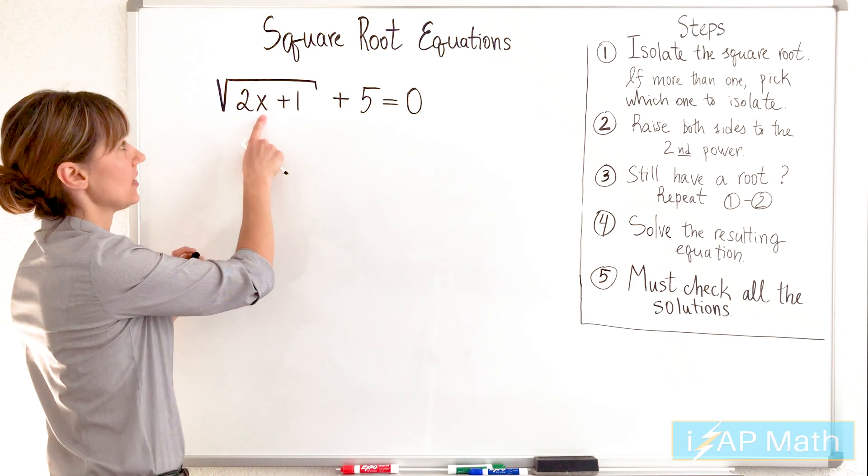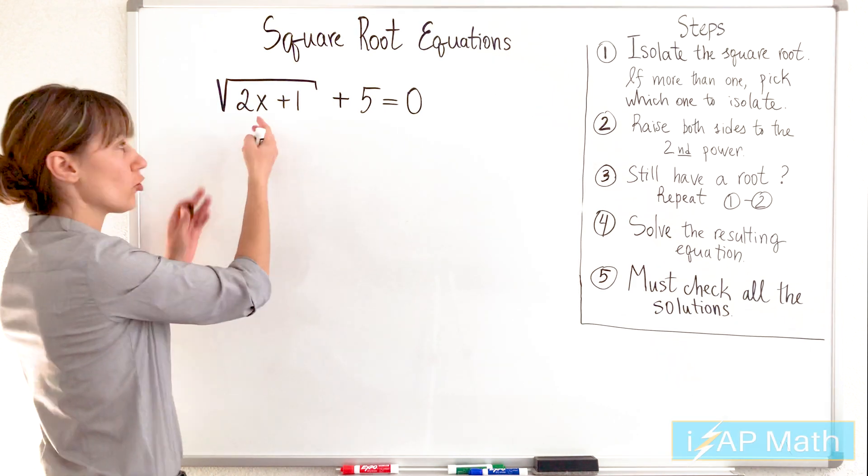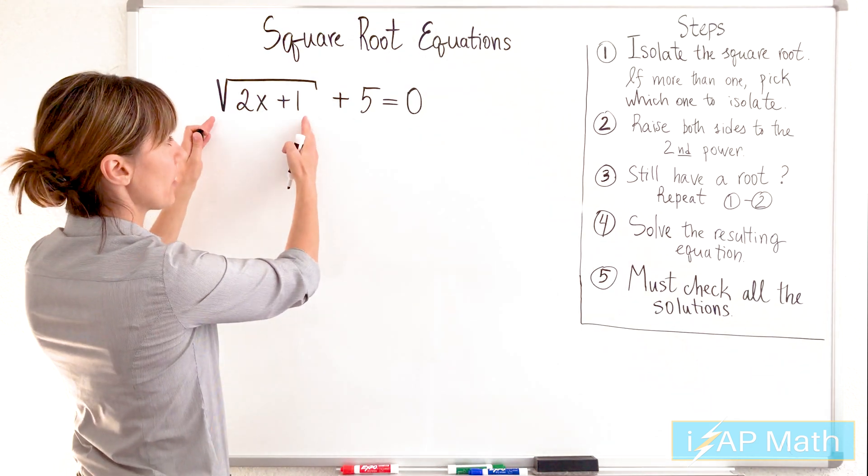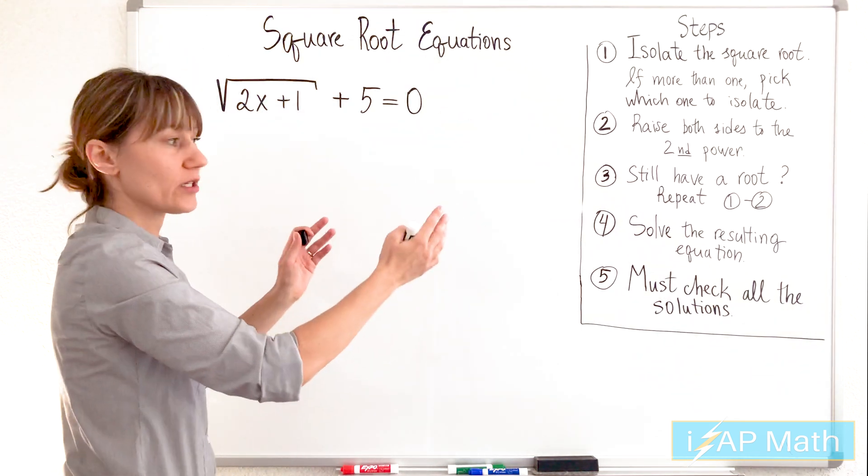Our variable is hidden under the root. So in order to extract this variable, we're going to first isolate the square root and raise both sides to the second power.